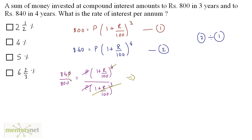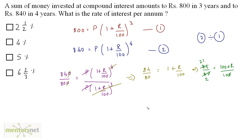So 84 by 80 equals 1 plus r upon 100, which gives 84 by 80 equals 100 plus r upon 100. Dividing numerator and denominator by 4, we get 21 by 20. So 21 times 5 equals 100 plus r. Therefore r equals 21 times 5, which is 105, minus 100. So r equals 5%. Option C is the correct answer.